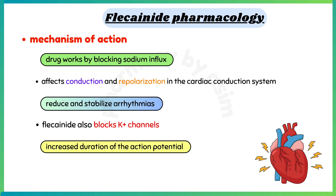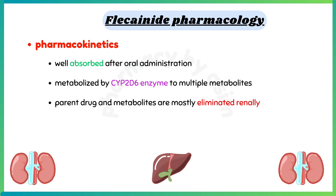Route of administration of Flecainide is oral. It is well absorbed after oral administration and is metabolized by the cytochrome P2D6 enzyme to multiple metabolites. The parent drug and metabolites are mostly eliminated renally.